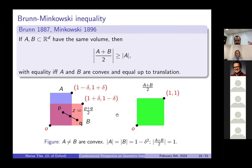As a final example, if A is a (1−δ)×(1+δ) rectangle and B is a (1+δ)×(1−δ) rectangle, then A + B over 2 is the unit square. A and B have size (1−δ²), A + B/2 has size 1, so we have strict inequality — because A and B are not equal up to translation.